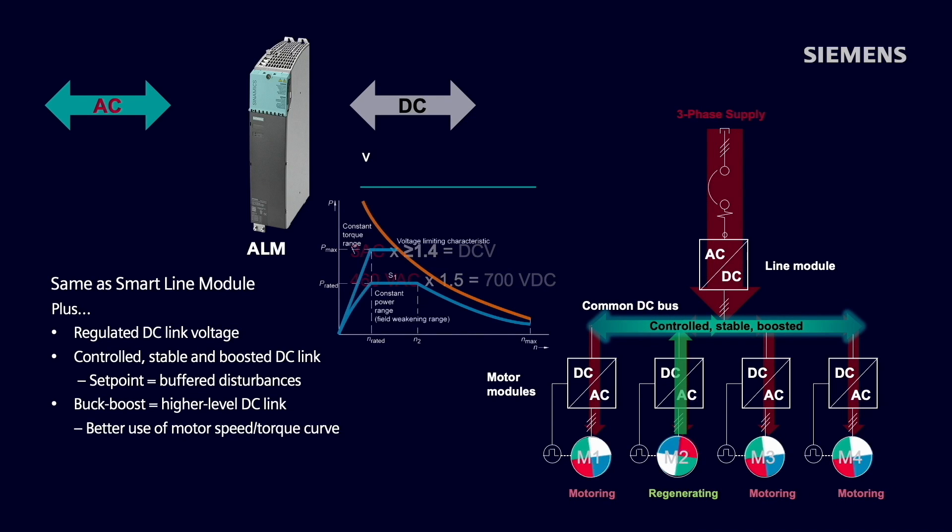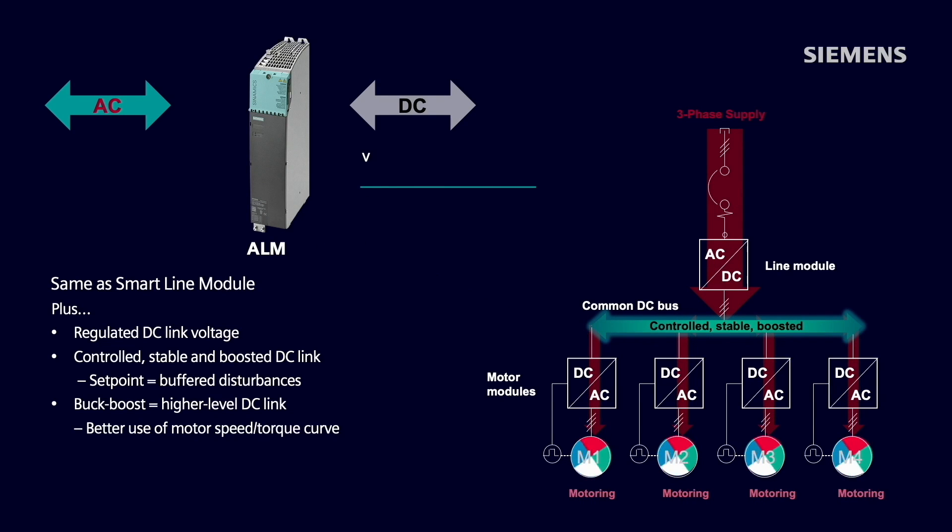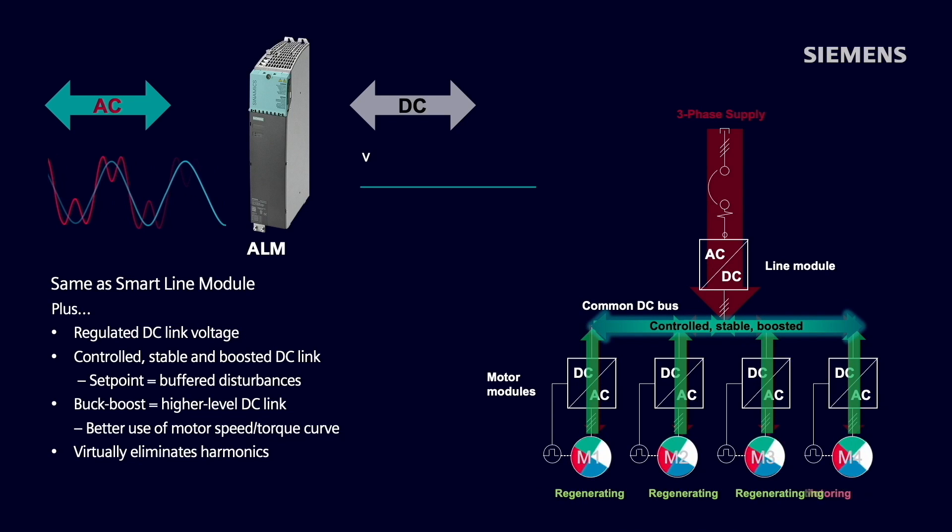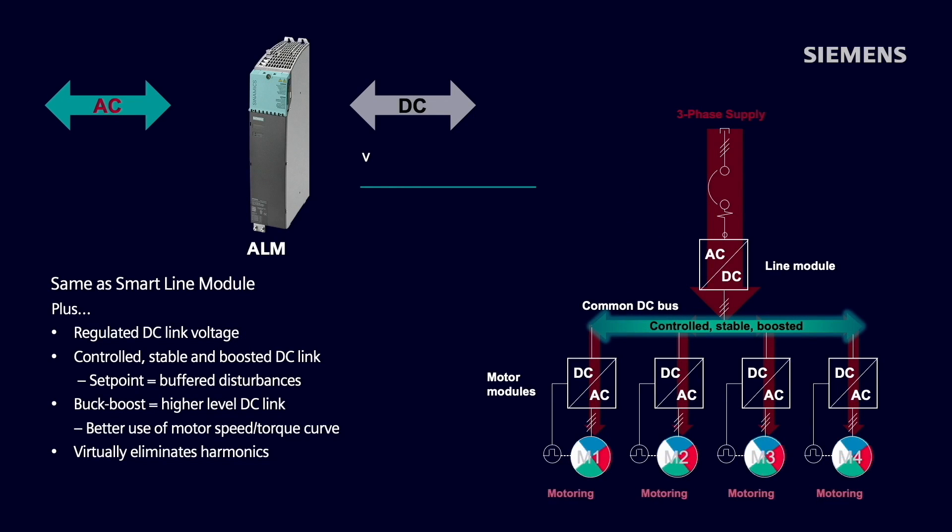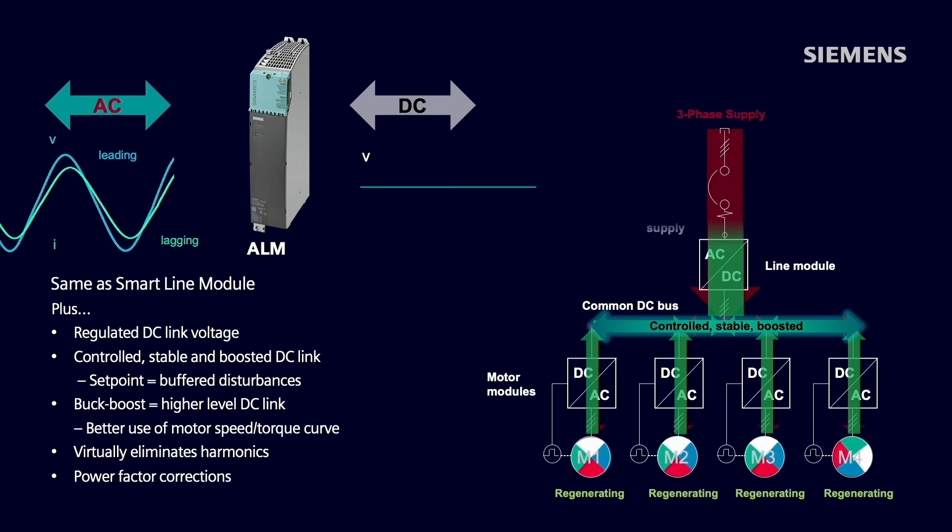Some additional advantages with the active line module include low line harmonics. The active interface module, which is used in combination with the ALM, provides line conditioning to virtually eliminate most harmonics. Additionally, this option allows us to do power factor correction. If we would like to have unity power factor from the drive system or a leading or lagging power factor, this can all be accomplished with the active line module. Having the capability to regulate the DC link with very little ripple on the DC link makes this the highest performance of the drive system selections.